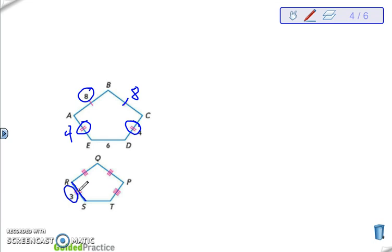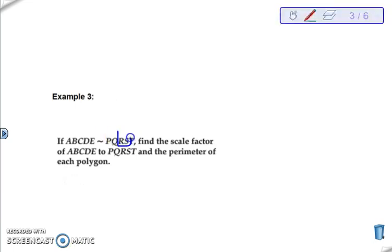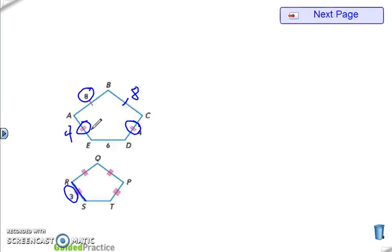We need to figure out which side matches up with RS. So if I go back to the congruent, or the similarity statement, RS matches up with CD. So RS has a 3, CD has a 4. So CD, like we said, matches up with RS. So our similarity ratio, our scale factor, is 4 to 3.